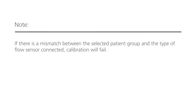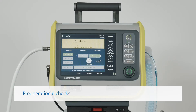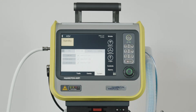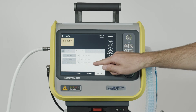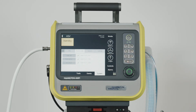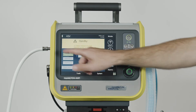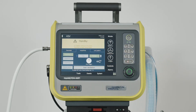If you've already performed the pre-operational checks, you don't need to do them again. The test results are stored in the ventilator's memory, even when it's turned off. Make sure that the setup you calibrated is not changed or altered while the ventilator is in storage. If you haven't already done the pre-operational checks, you need to run them now.